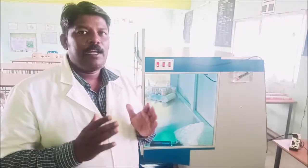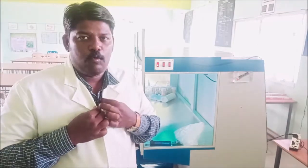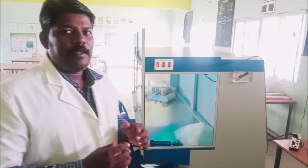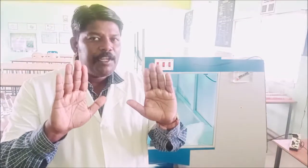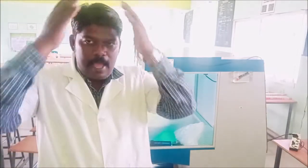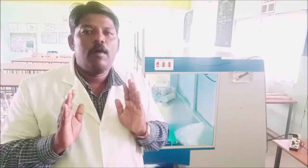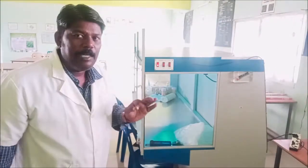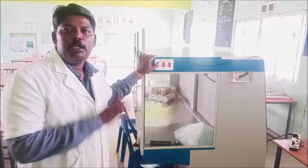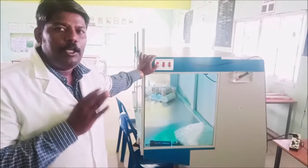Before using the laminar air flow chamber, there are some precautions. You should wear a lab coat. Your hands should be disinfected with disinfection solution so they are free of microbes. You also have to wear a mask. Two to three minutes before work, you need to switch on the UV light.